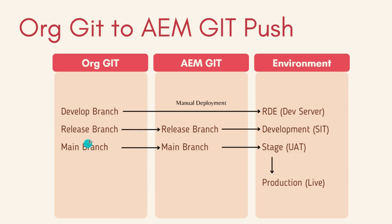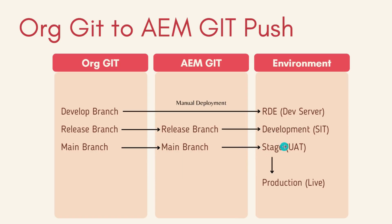The release branch needs to be synced from your organization to AEM Git — I will explain how to sync that in this video. From that release branch, you will create a CI/CD pipeline for it to deploy onto your development environment reserved for SIT. From the main branch of the organizational Git, you will sync the code onto the main branch of the AEM Git. Then from the main branch, you deploy it onto the Stage environment. Once UAT happens in Stage and is approved, you click a button in your CI/CD pipeline for the code to roll over to production. So there are only CI/CD pipelines for the development and stage environments basically.